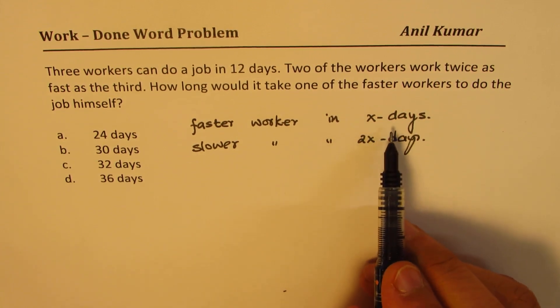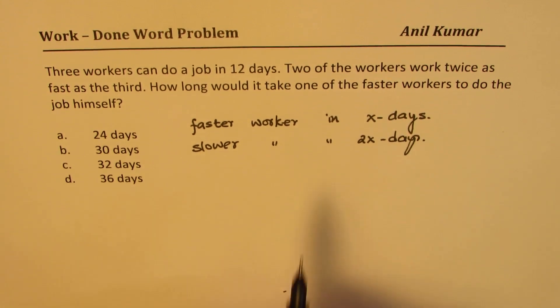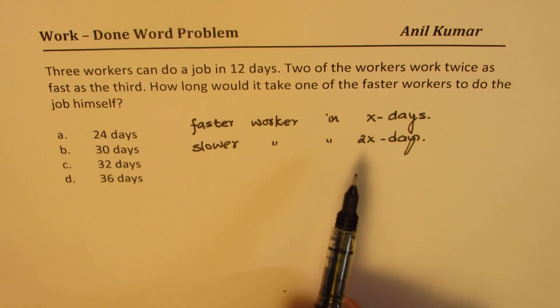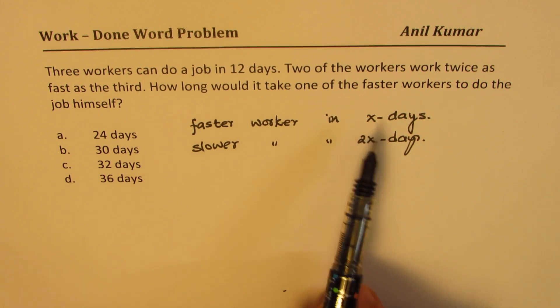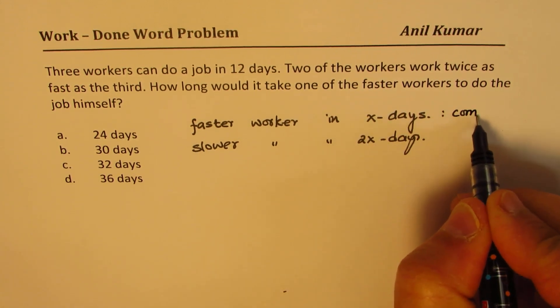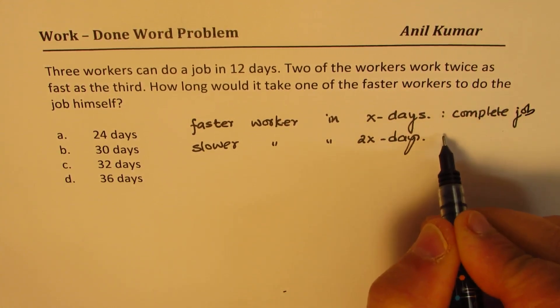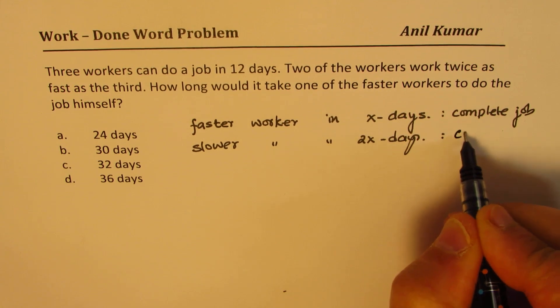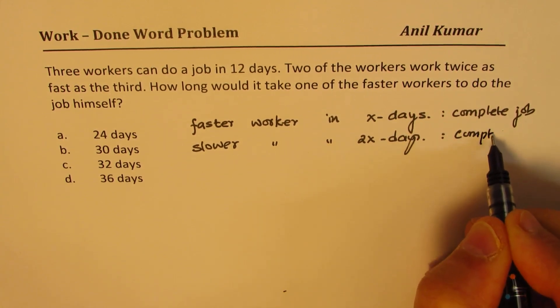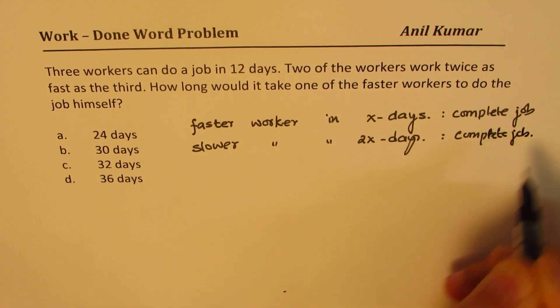Doing a job faster means you're taking less time, slower means you're taking more time. So when you're doing the complete job, this is X days to complete the job. This is 2X days for complete job.